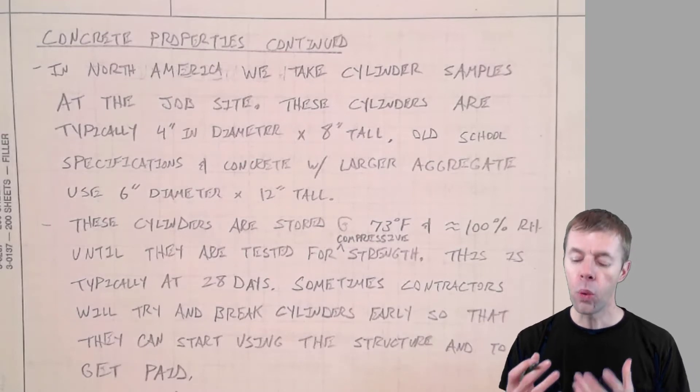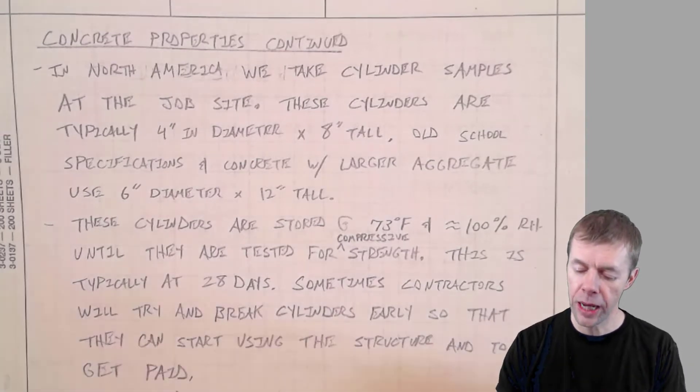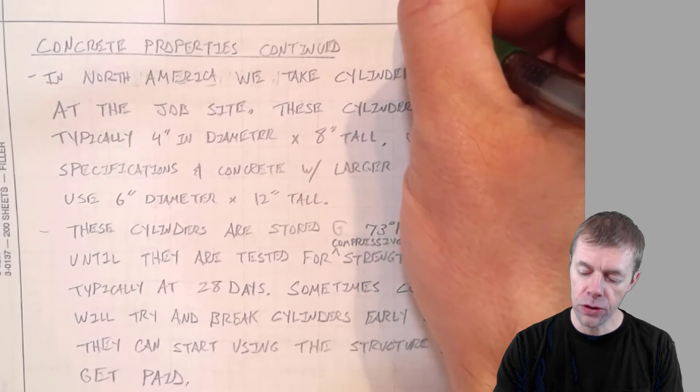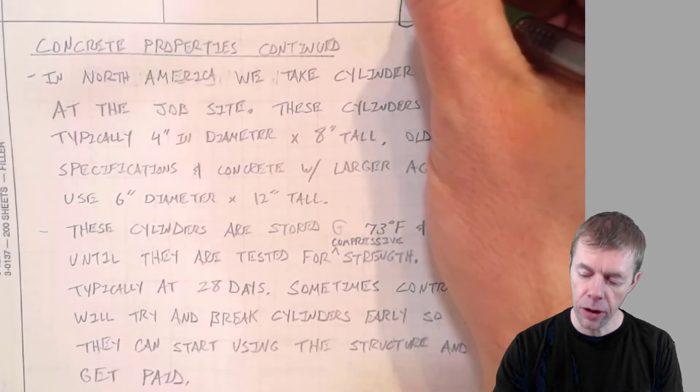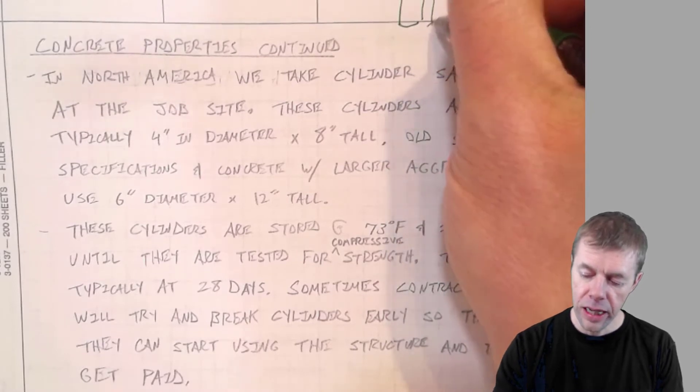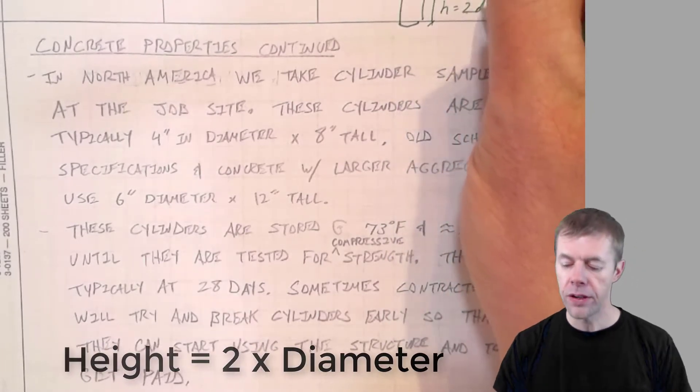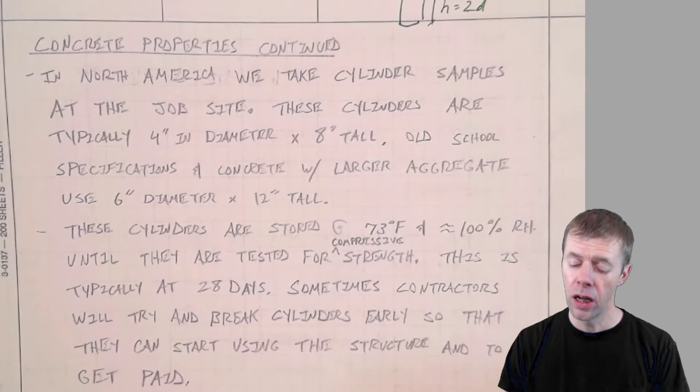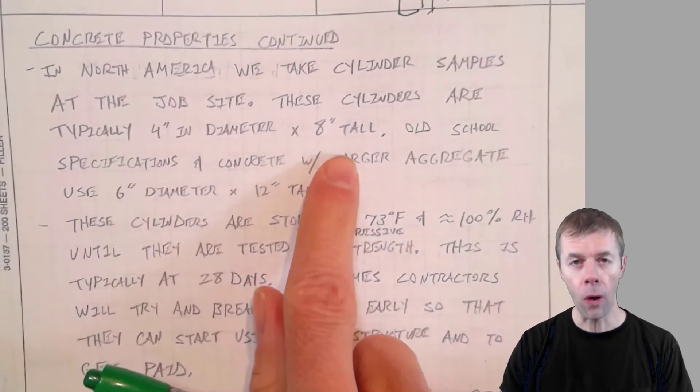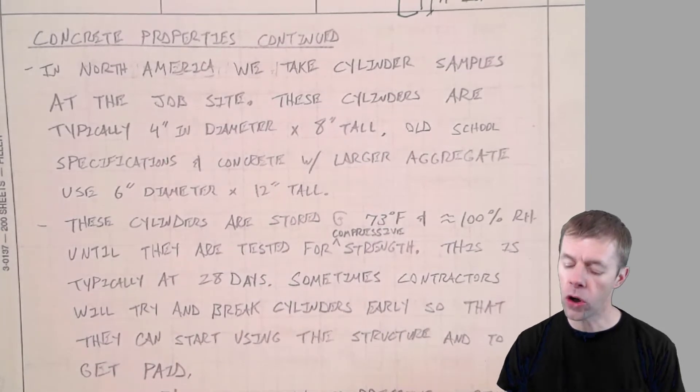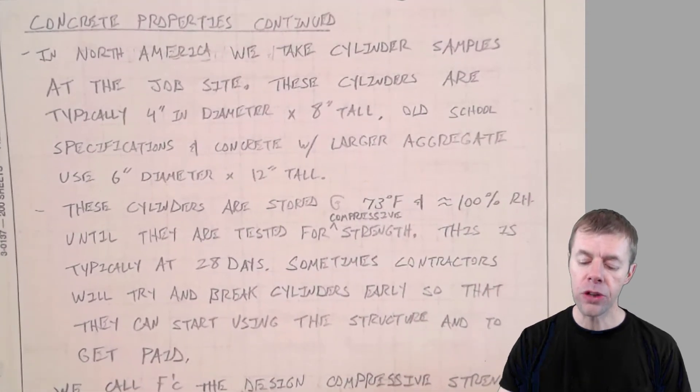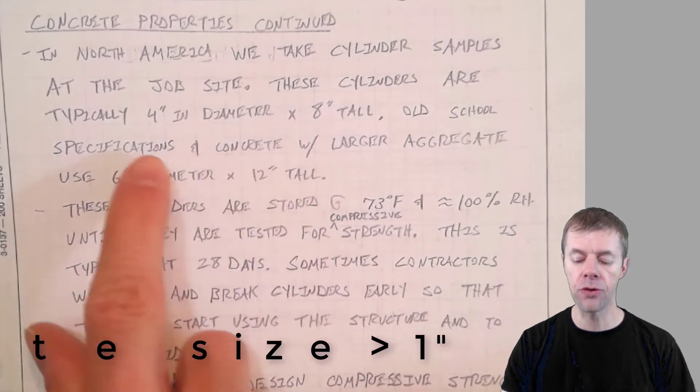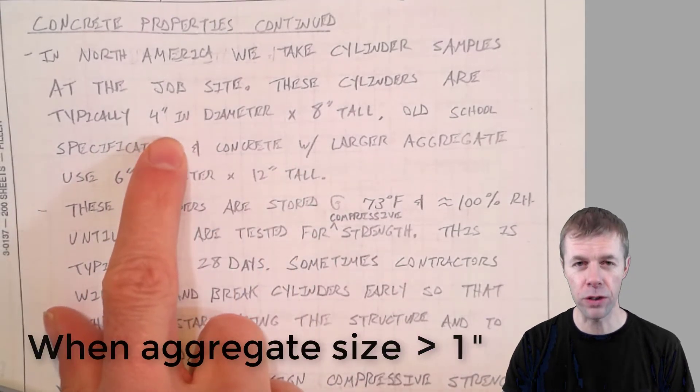In North America, we commonly use cylinder samples to sample our concrete. These cylinders, if this is the diameter D, then the height is twice the diameter, a one to two ratio. And the cylinders are typically four inches in diameter by eight inches tall. But some old school specifications, and actually sometimes concrete with larger aggregate sizes, you must use a six inch diameter by 12 inch tall. Because you just can't fit some of the larger aggregates inside the four inch diameter cylinder.